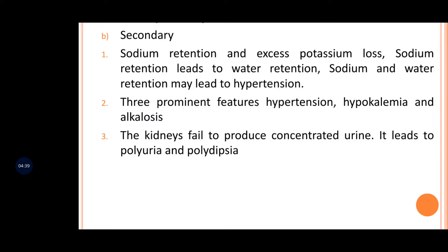The third important feature involves hydrogen ion secretion. With excess potassium ion excretion, hydrogen ions are also affected — hydrogen ions are retained in the plasma, causing alkalosis. Because of hypokalemia from excess potassium excretion, hydrogen ions accumulate in the blood. The kidney also fails to produce concentrated urine, leading to polyuria and polydipsia, as sodium retention leads to water retention.